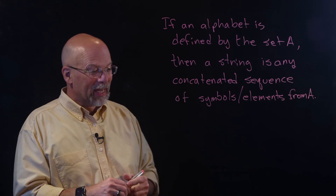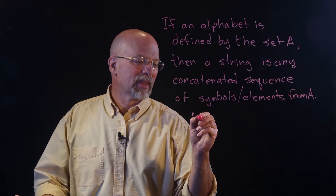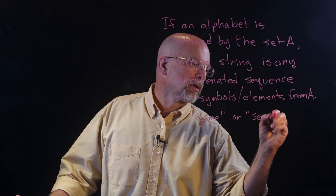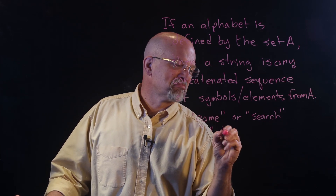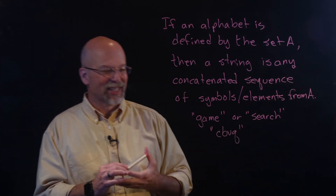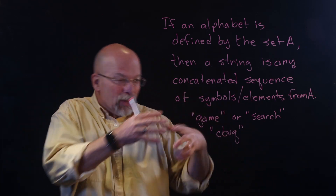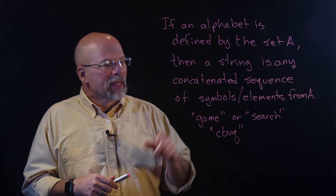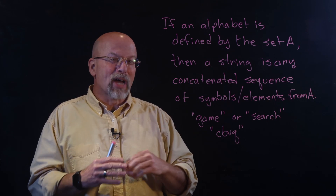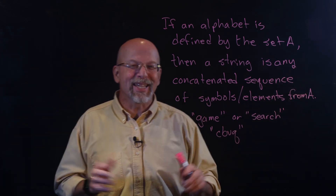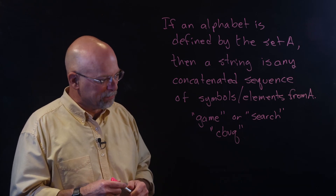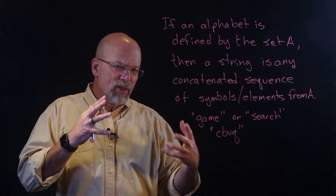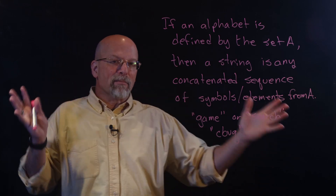Think about those monkeys — they could type anything like 'game' or 'search,' but they could also type things like 'CBVQ.' Nonsense. The key is that you can take any sequence from that keyboard and create a string from it, but the monkeys are not going to type infinitely long strings. Even the monkeys are going to need a break. When we're talking about these strings, we're talking about combinations of any of those elements from the set, but they can't be infinite.